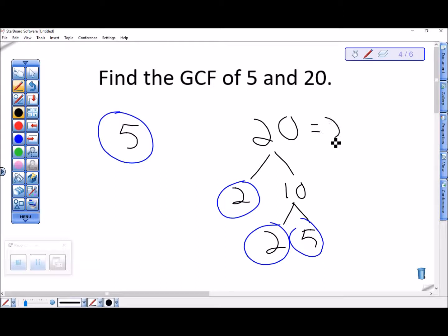So 20 is 2 squared times 5. Now looking at the prime factorizations for these two numbers, it's pretty clear and jumps right out at me that 5 is the greatest common factor of these two numbers.